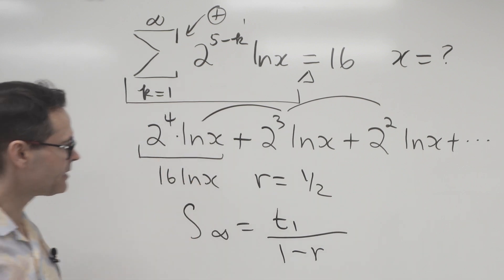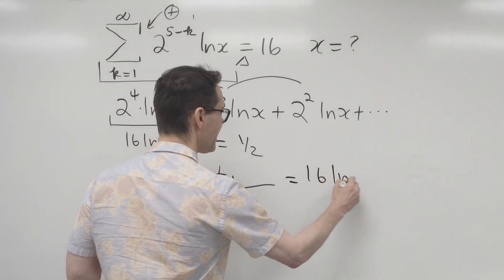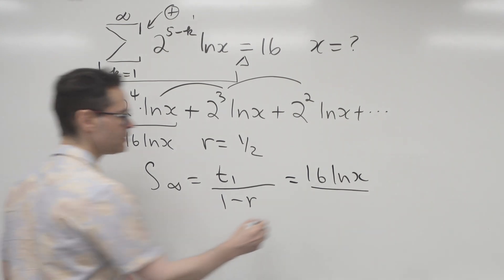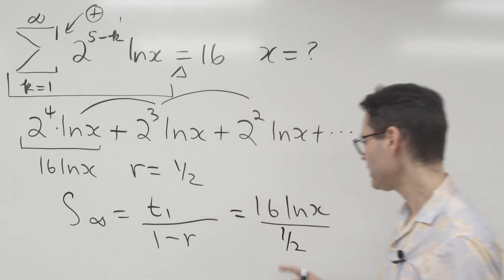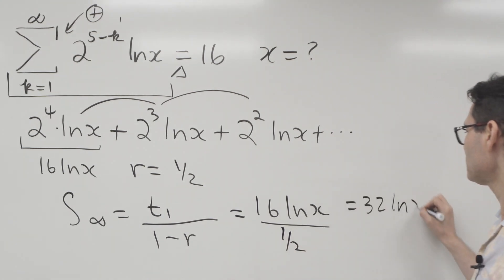Alright, so what I do is I take my first term, which is 16 ln x, and I'm gonna divide it by 1 minus the common ratio, which is a half. Okay, well this is turning out to be pretty good, because 16 divided by a half is 32, so 32 ln x.